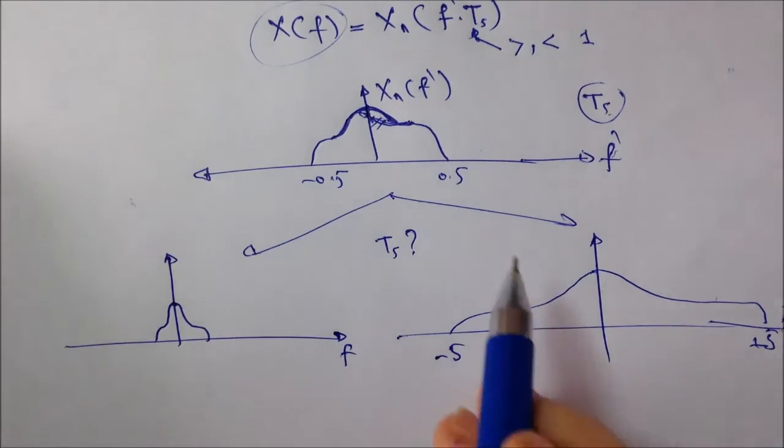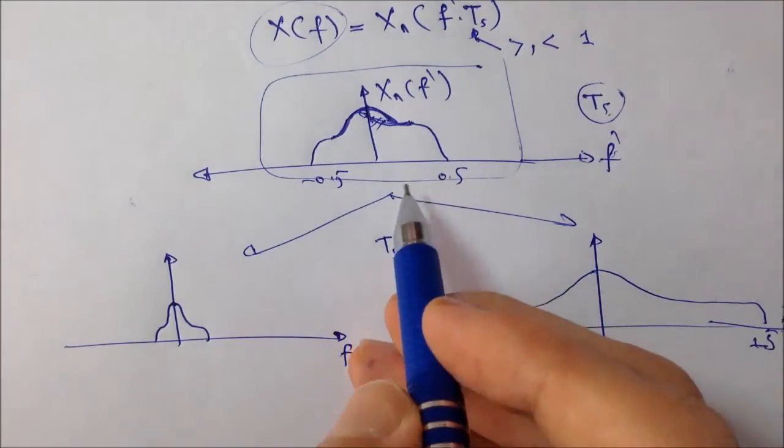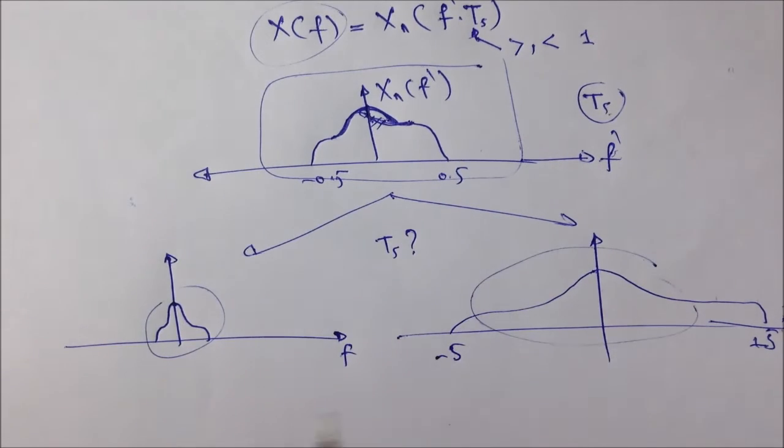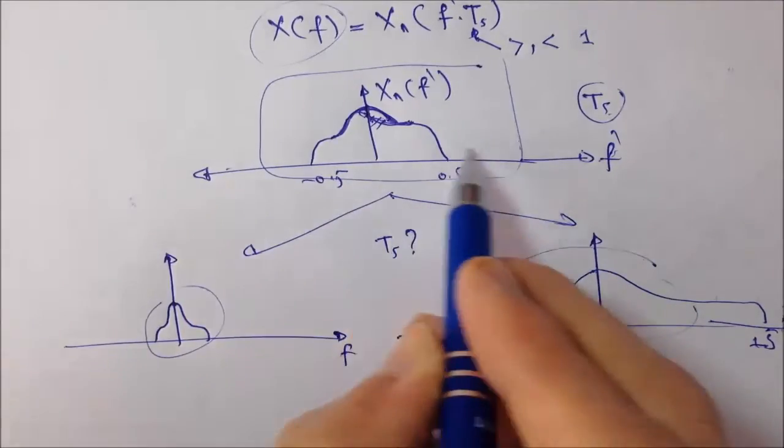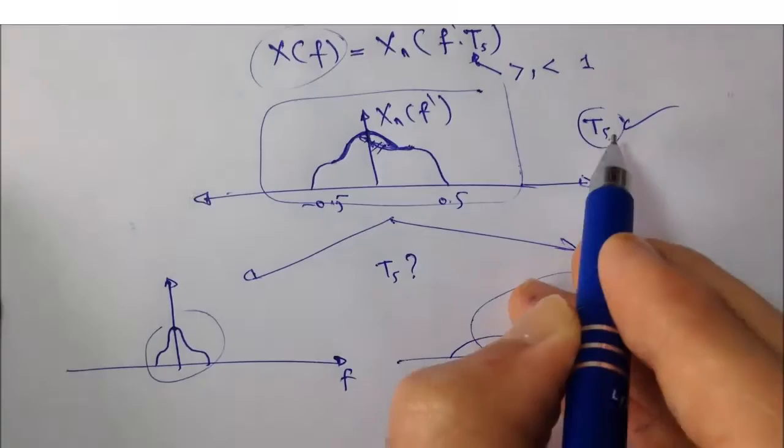So, that's the advantage of the DFT. It gives you a normalized spectrum and gives you an idea about the pattern of the spectrum, regardless of the actual scale of the frequency axis, which you can guess it after you find the value, the true value of Ts.